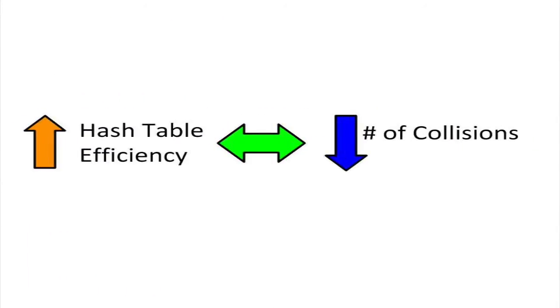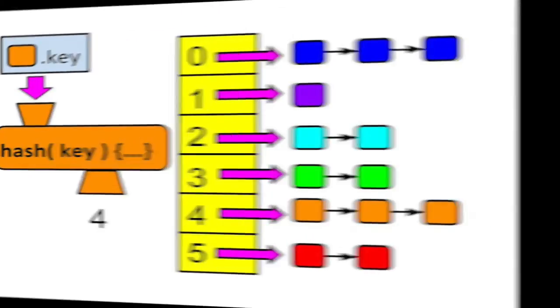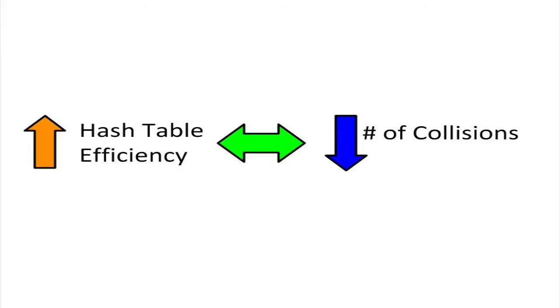To maximize the efficiency of storing and retrieving items in the hash table, we need to minimize the number of collisions. Each collision is another item in the bucket, another node in the linked list. We know that storing and retrieving items in a linked list grows more inefficient as the list grows longer. So it makes sense to keep these linked lists as short as possible.